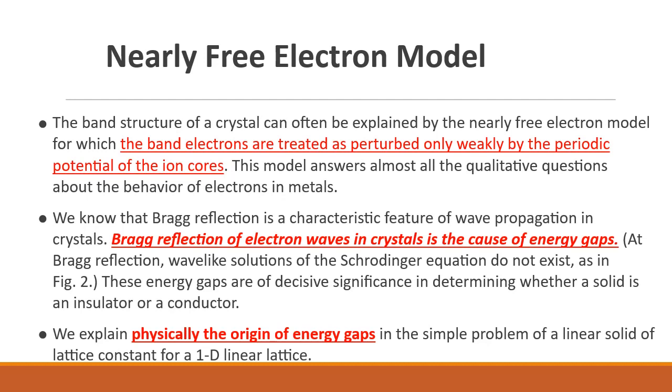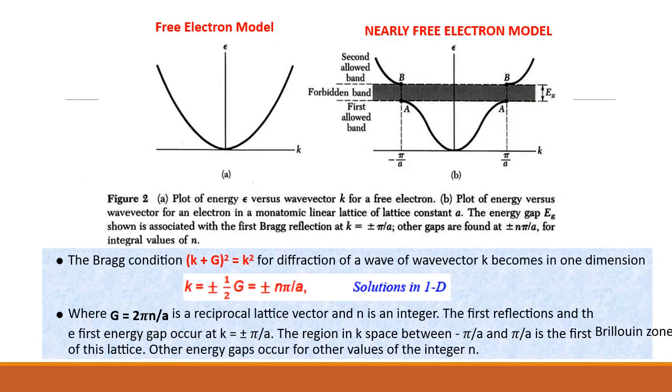Consider one-dimensional linear lattice to explain origin of energy gaps. The Bragg diffraction condition is n lambda equals 2 a sin theta, where a is the lattice spacing. In reciprocal lattice the Bragg condition is k plus g whole square equals k square for diffraction of a wave of wave vector k. K equals plus or minus half g, where g is 2 n pi by a, where n is an integer.